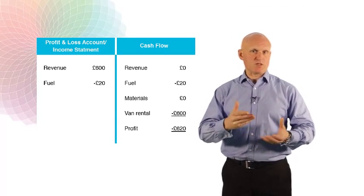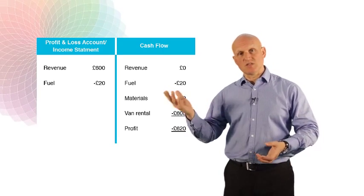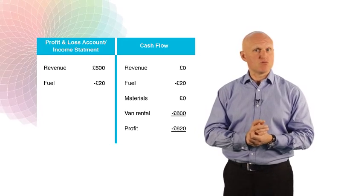With the fuel, he spent £20 on fuel, he actually paid the £20, he used the fuel up, so the accountant shows that as an expense relating to January.